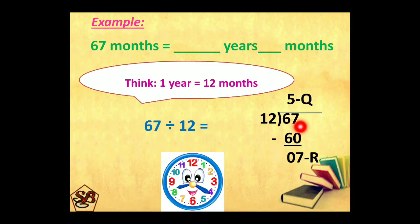When we divide 67 by 12, 12 fives are 60. 7 is the remainder and 5 is the quotient. So, 5 will become years and 7 will become months. 5 years 7 months. 67 months is equal to 5 years 7 months.